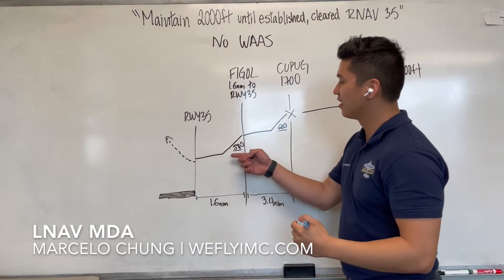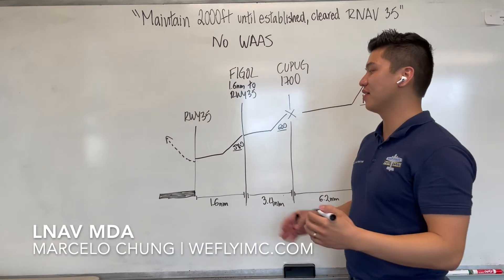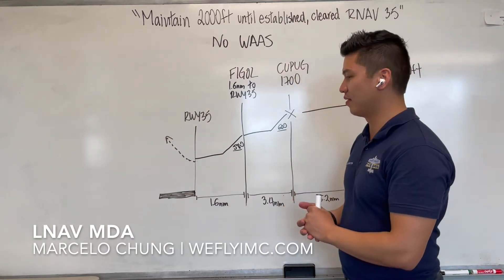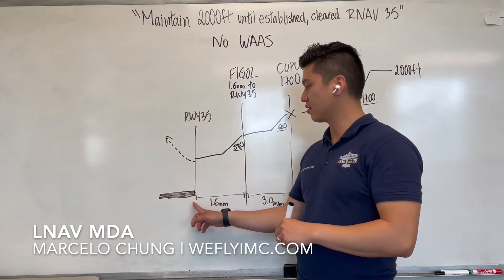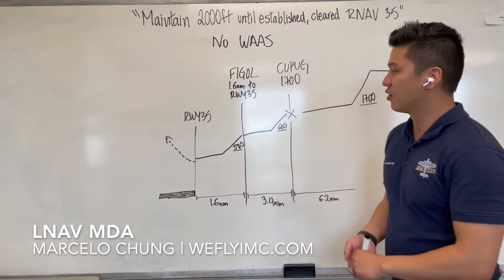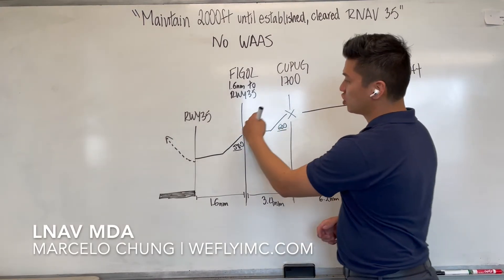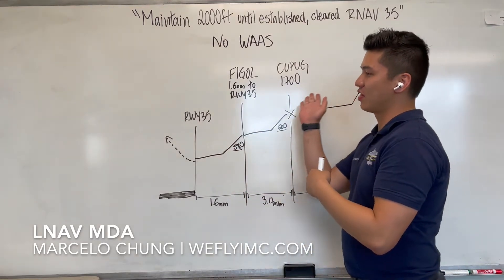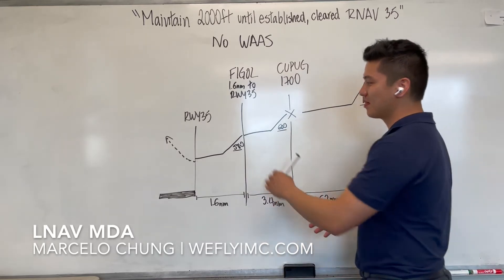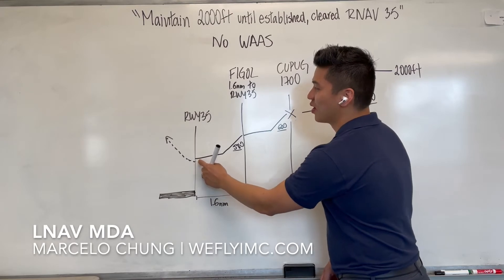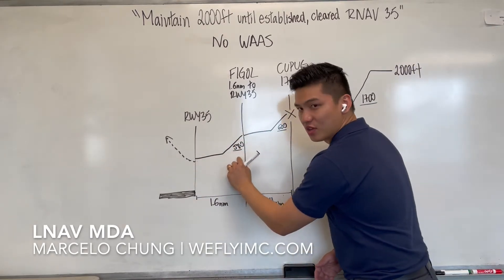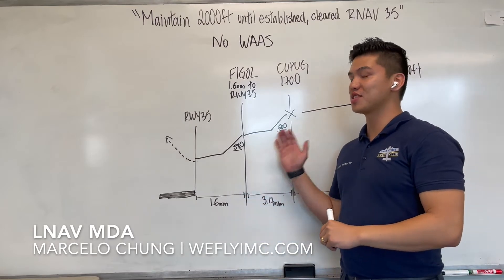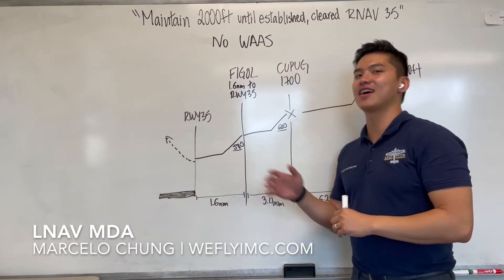Once you cross Figo at or above 600 feet, descend down to your MDA minimum of 580 feet and maintain that until you reach your MDA missed approach point. The missed approach point for an LNAV MDA minimum is always the runway threshold. Even though the profile view shows you starting your missed approach earlier, that depiction is only for the LPV DA minimums. If you're flying LNAV MDA minimums, your missed approach point is runway 35. The profile view doesn't show that, but that's exactly how you're supposed to execute the approach.